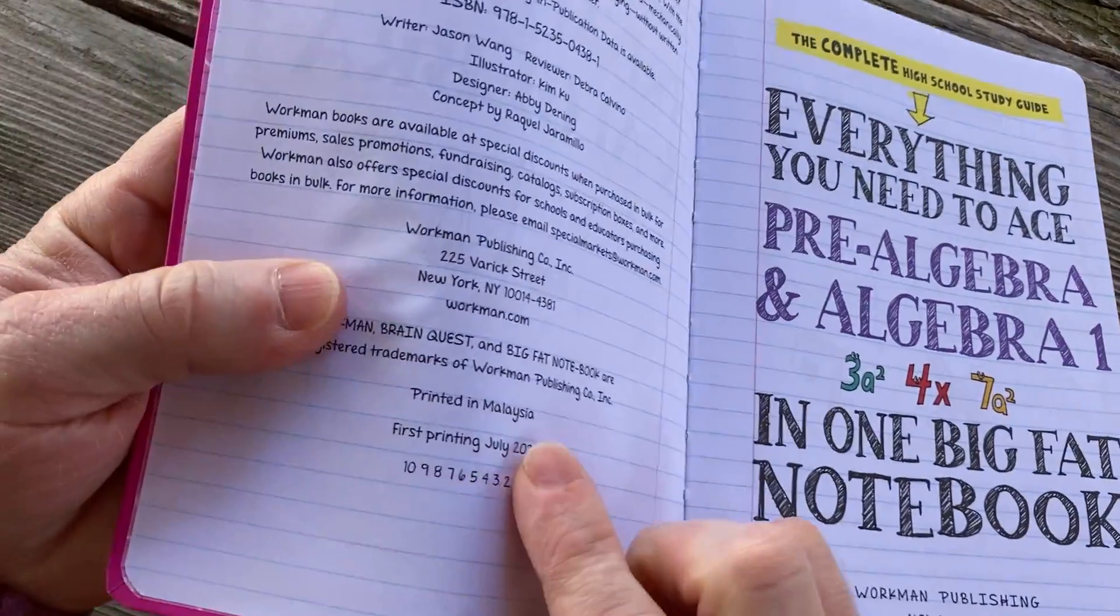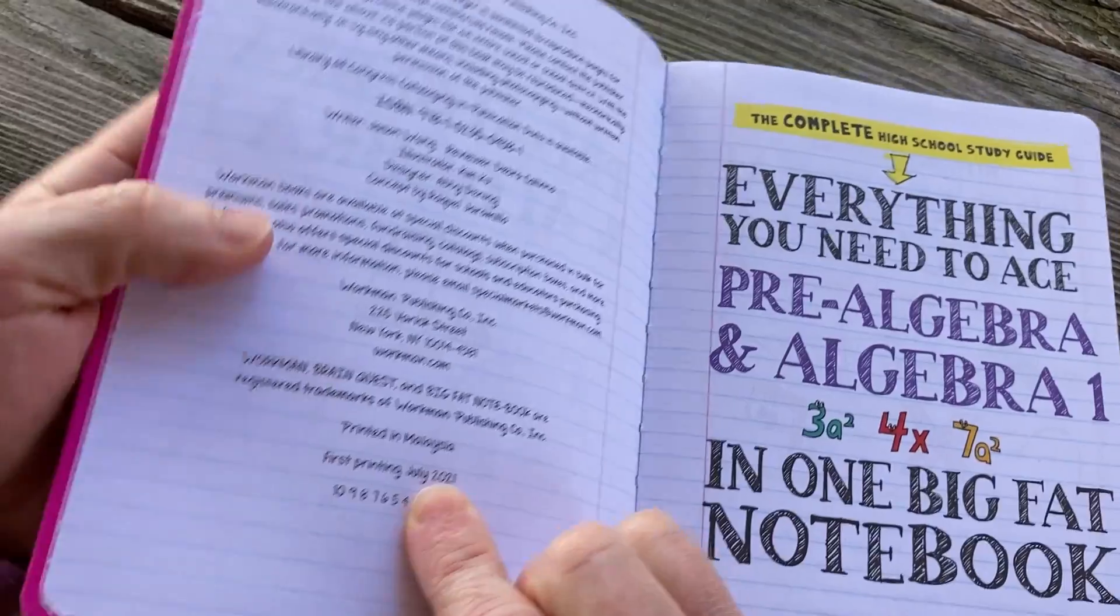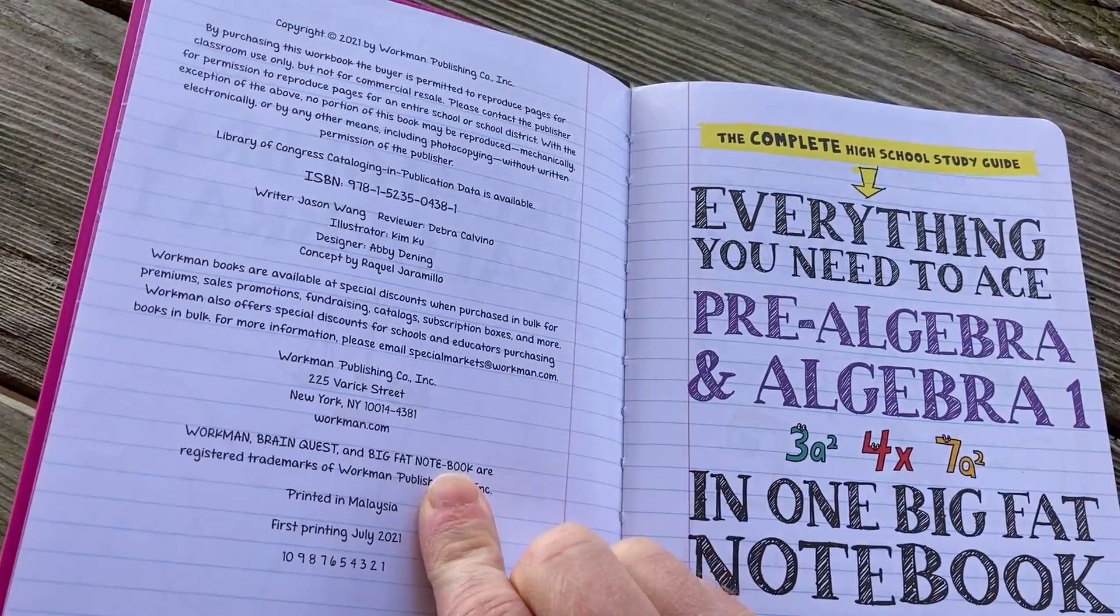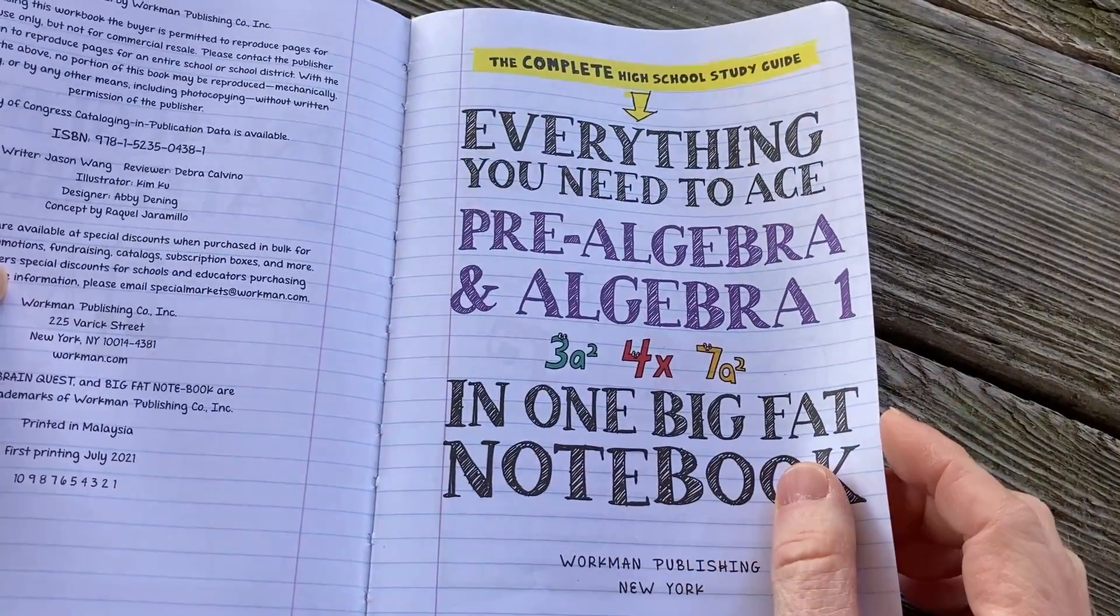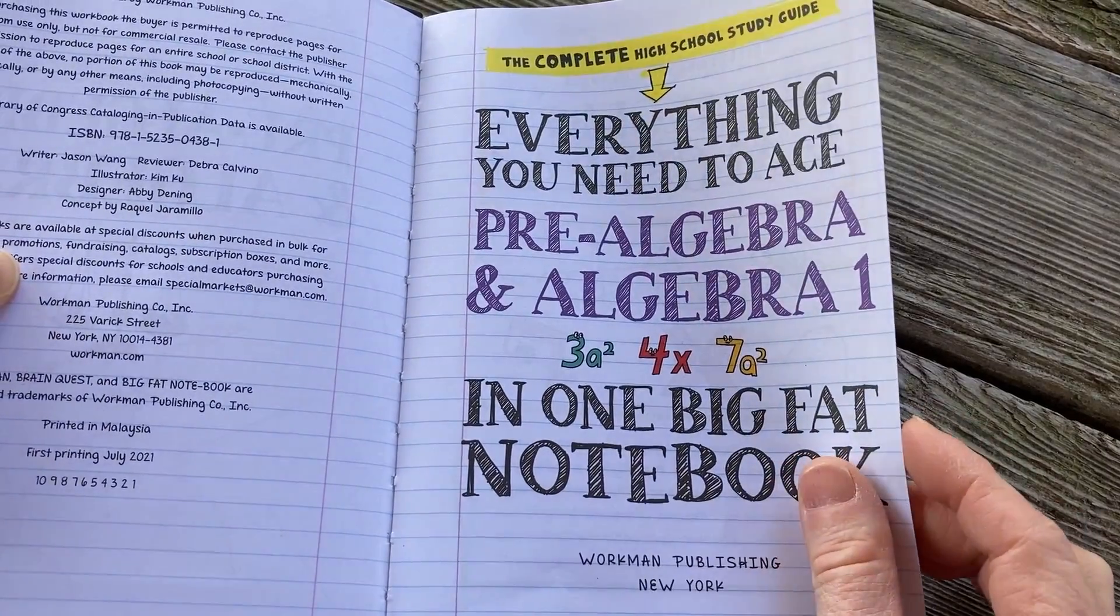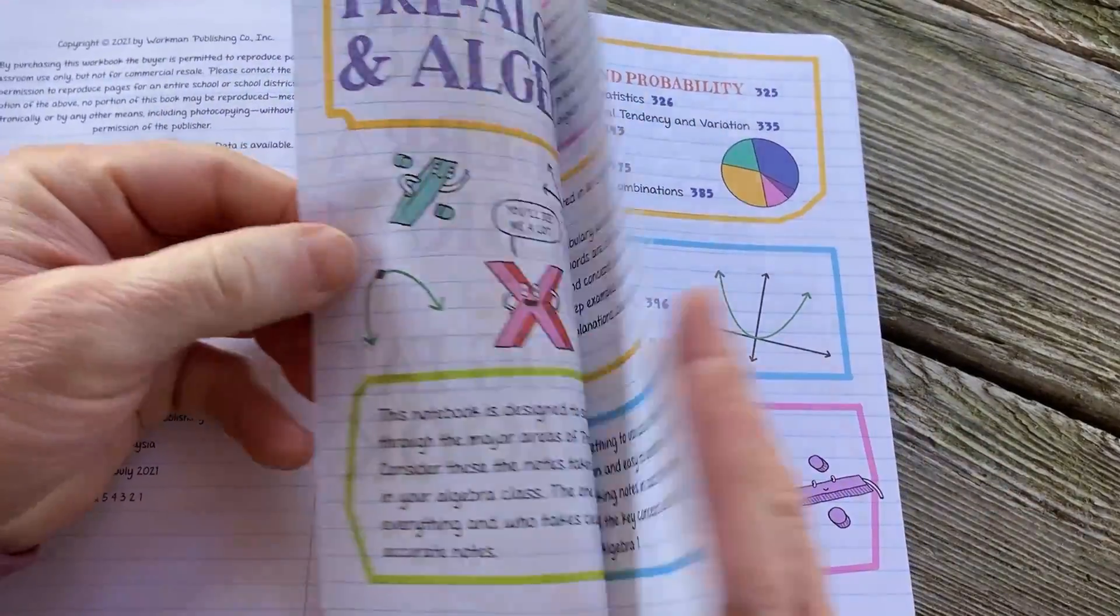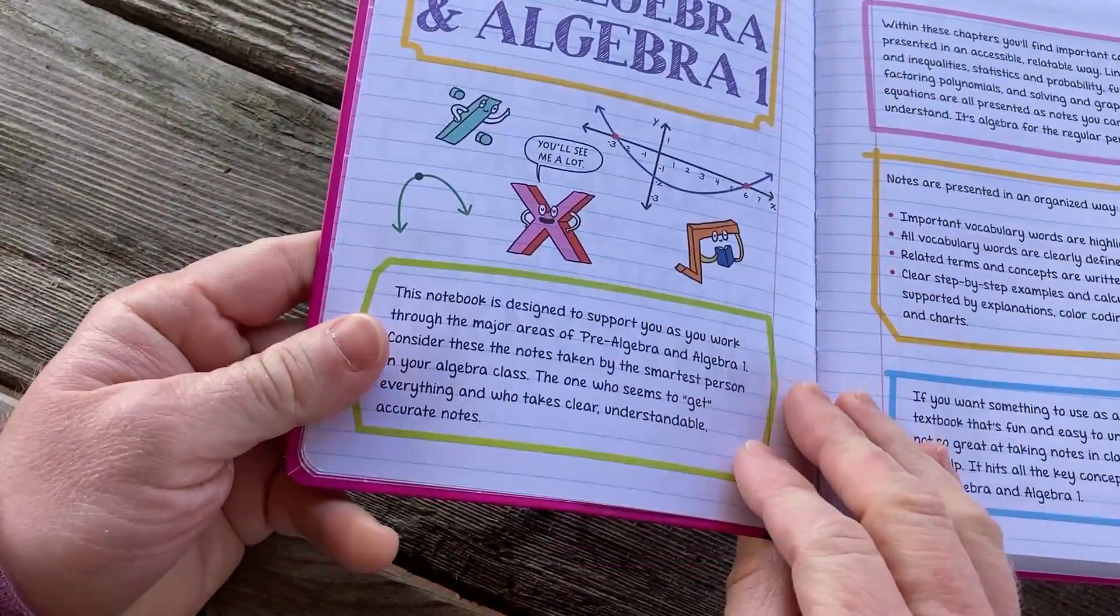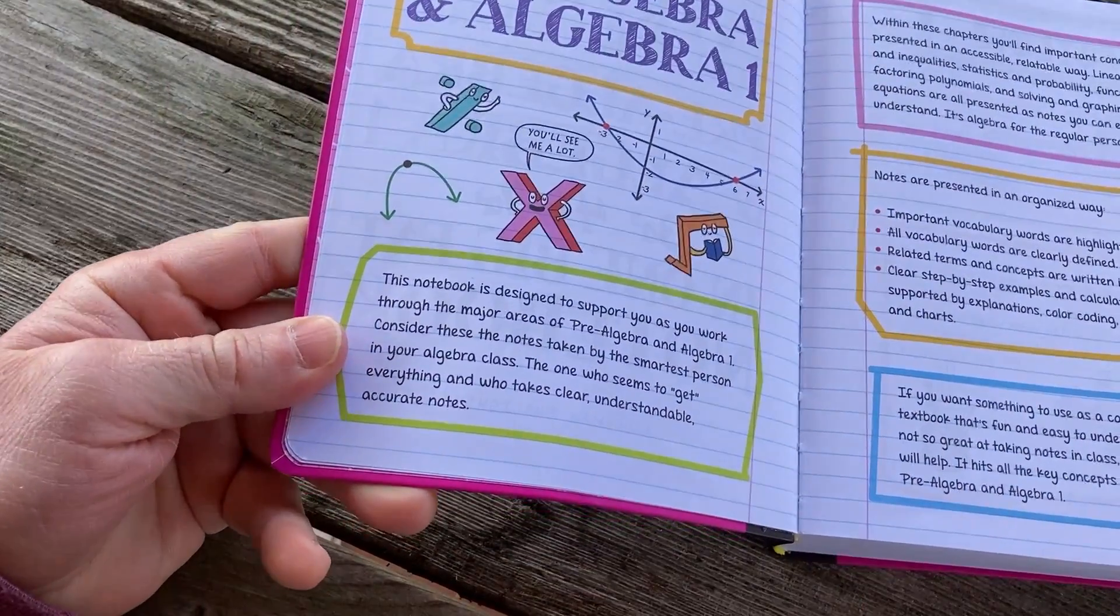So this one was first printed in July 2021. It's by Workman Publishing, the complete high school study guide, everything you need to ace pre-algebra and Algebra 1 in one big fat notebook. And here it tells you a little bit how the book is organized. It's really cool.